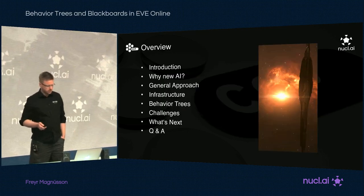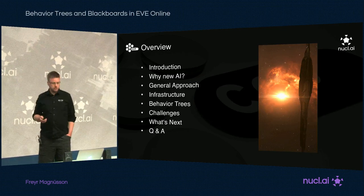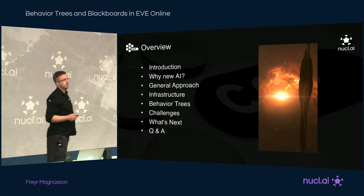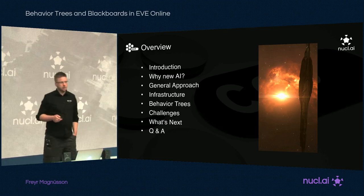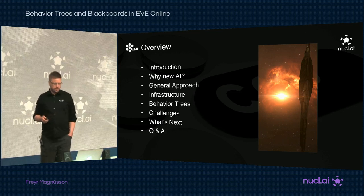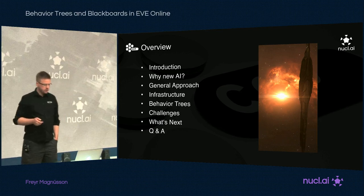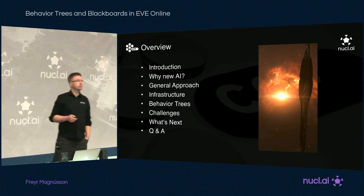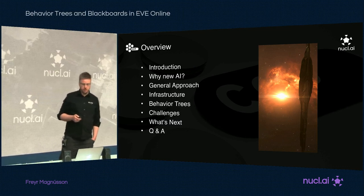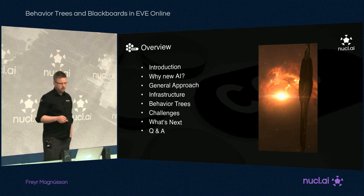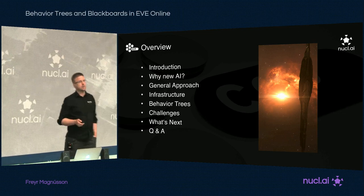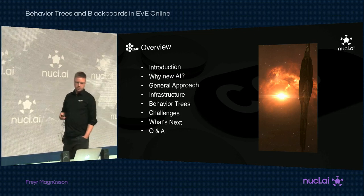The structure of this talk is: I'll be introducing EVE Online and give you some context, say a few words about why we needed new AI to begin with, explain a bit about our general approach to this project and some infrastructure changes we made to make this happen. Then I'll go into the specifics of our own implementation of Behaviour Trees and how we use them, list some of the main challenges we faced during development, and then go over what our next steps are before Q&A.